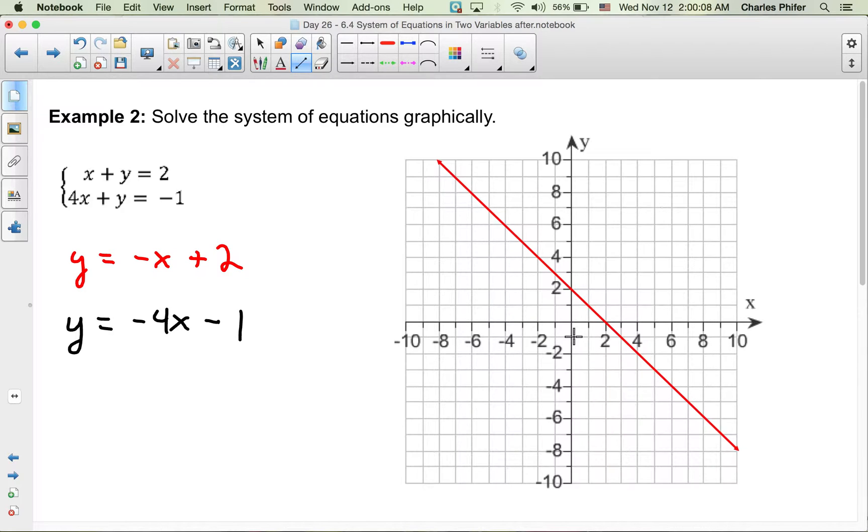We start at negative 1, so down 1, 2, 3, 4, over 1, down 1, 2, 3, 4, over 1. We'll finish going through that point, and then let me go in the other direction.